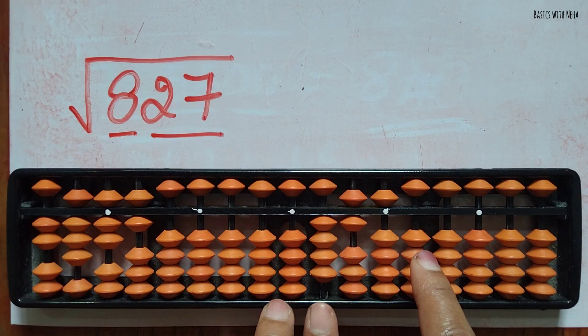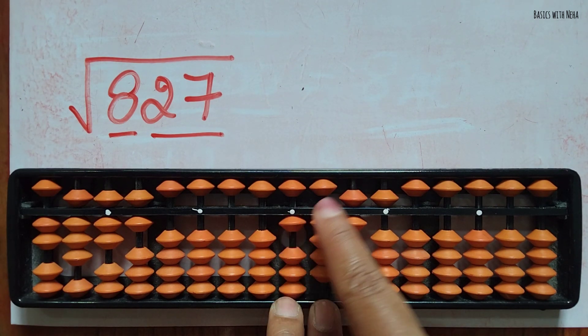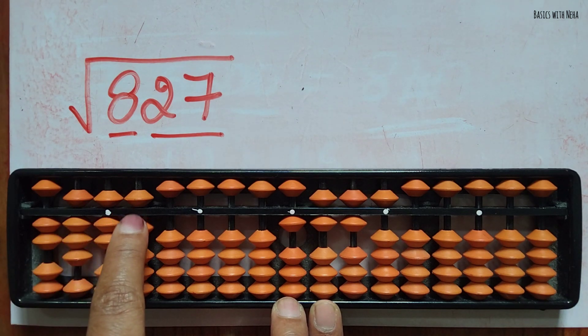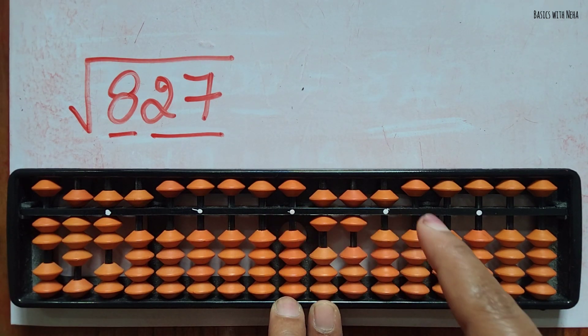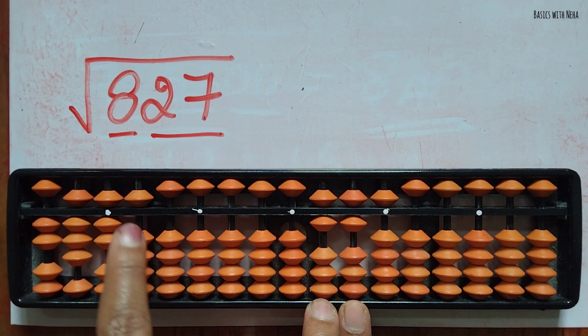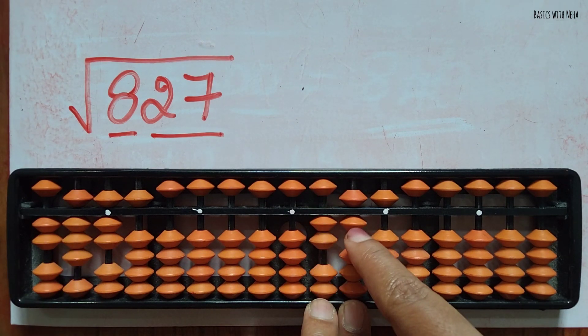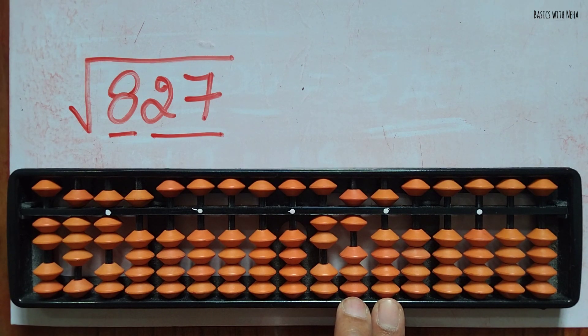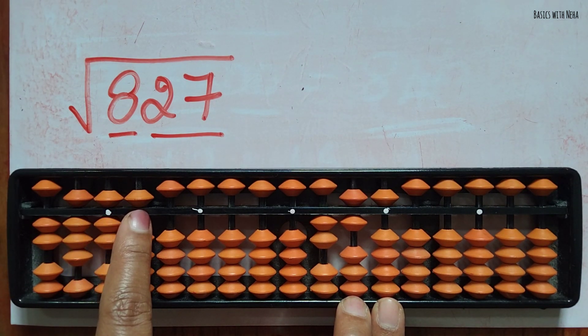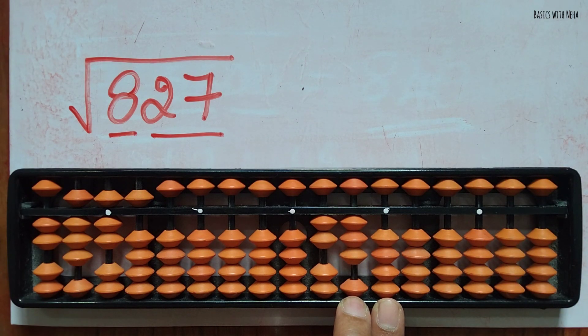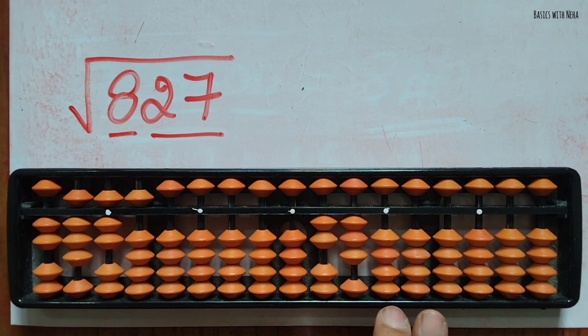Again come back to this rod and add 12, again back to the same position. Now 2 5s are 10. Come to this rod, then 8 5s are 40, I can remove 40. Now this rod, 7 5s are 35. I'm done.